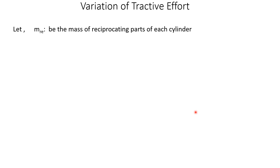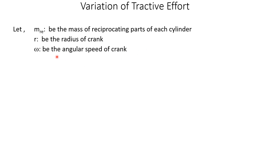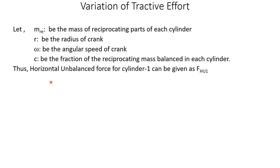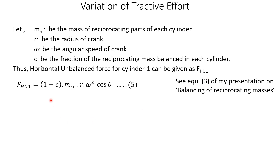Because the two cylinders lie in the same plane, the vector sum of their unbalanced forces along the line of stroke (horizontal) is known as the variation of tractive effort. Let m_re be the mass of reciprocating parts per cylinder (assumed equal), r the crank radius, ω the angular speed, and c the fraction of reciprocating mass balanced in each cylinder.